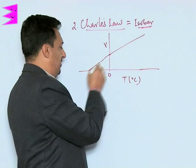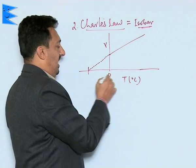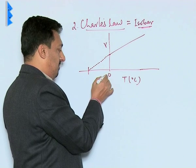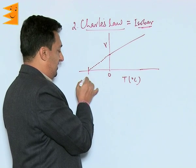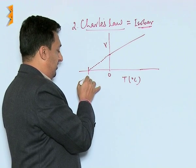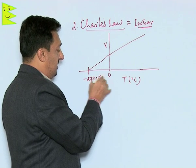By extrapolating, we can find out where it intercepts the x-axis. From the number line system on this axis, this temperature is minus 273.15 degree Celsius.